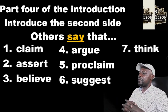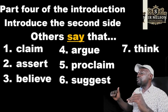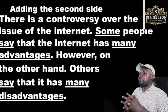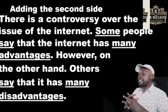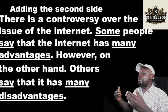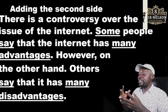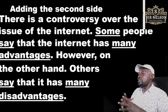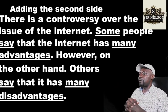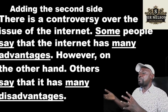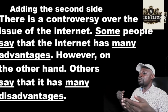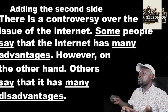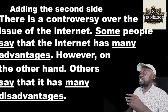We have finished the first side and need a linking phrase. For example, adding the second side: 'Others say that it has many disadvantages.' 'It' refers to the internet — we know we are talking about the internet, so we don't have to repeat the word 'internet,' we use the pronoun. Don't use the verb 'say,' the word 'many,' or the word 'disadvantages' in your essay — use the synonyms we have looked at.